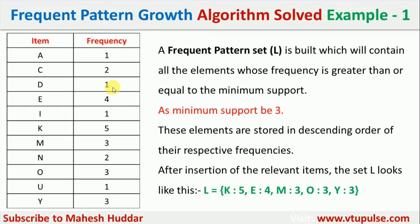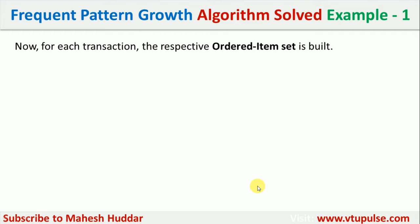Once the frequent item sets are found, they must be arranged in decreasing order of frequency. K comes first, then E, and M, O, and Y all have the same frequency. However, M was bought first, then O, then Y, so the final ordering is: K, E, M, O, Y.